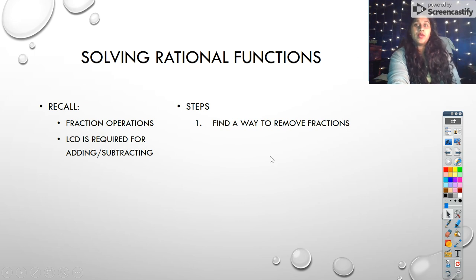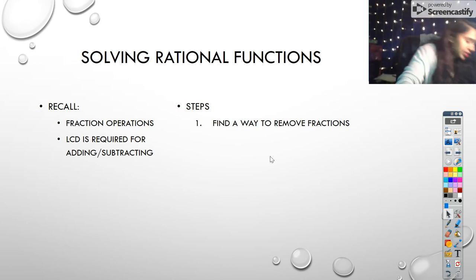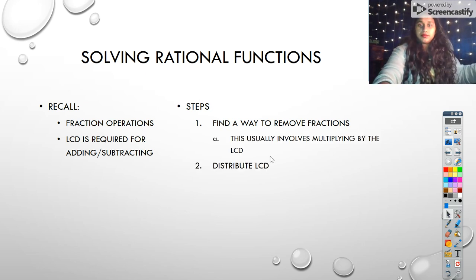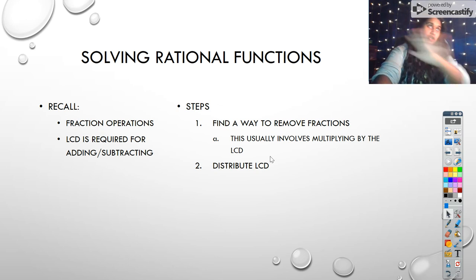First, you want to find a way to remove the fractions. Usually this means your least common denominator. Sometimes we can multiply simply the least common denominator and it's nice and easy. Other times you actually have to do some fraction manipulation and that's okay. Then you distribute your least common denominator, especially if you're working with just the numerators at this point, you definitely want to make sure you're distributing all of the multiples because you're going to want to see it as termed out as possible because we're going to want to get it equal to zero.